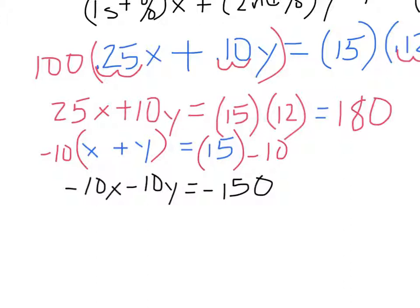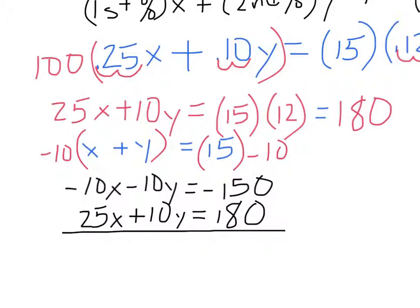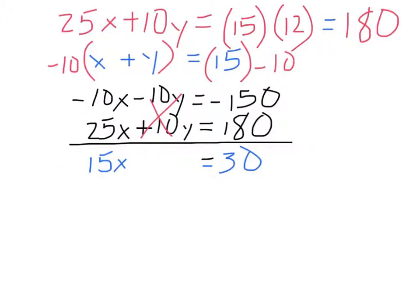So there is the adjusted version. Let's recopy the other equation: 25x plus 10y equals 180. Now we add these together. So 25 minus 10 is 15x, plus 10y minus 10y cancel out. And 180 minus 150 is 30. So to get x by itself, divide by 15. Also divide this by 15.